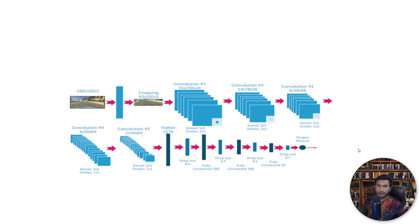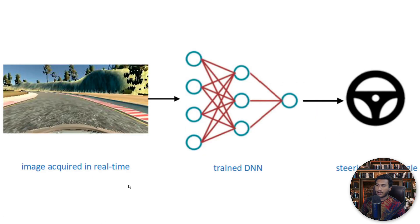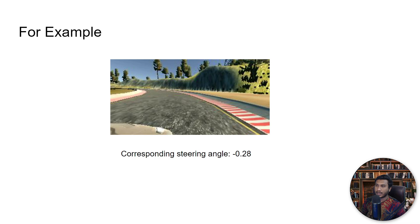We're going to take these images and apply a convolutional neural network to extract features. If you're familiar with CNNs, you know why we need these features — when working with images or videos, we use convolutional networks to extract image features. Once we get the features, I'll train a deep neural network. This network will try to predict the steering wheel angle. For example, one training sample might have a corresponding steering angle of minus 0.28.